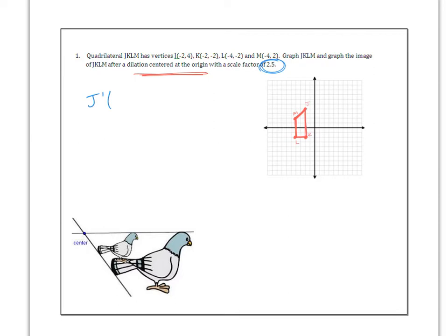So J prime, imagine if you do -2 times 2.5, you get -5. And imagine if you do 4 times 2.5, you get 10. K prime, -2 and -2 become -5 and -5.